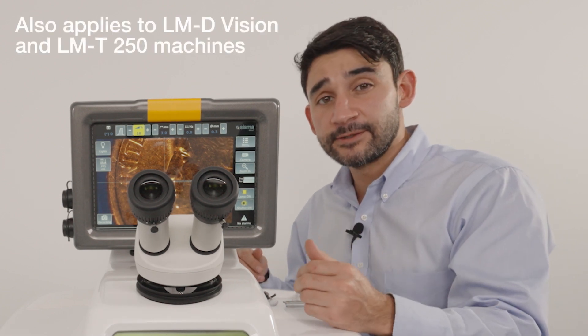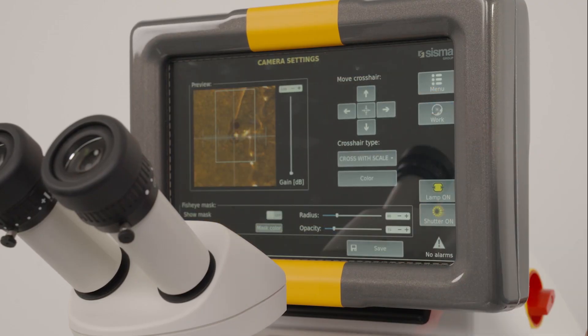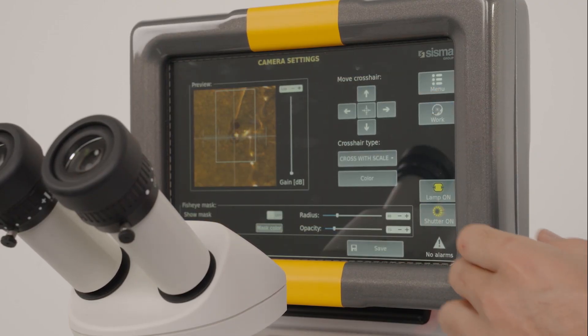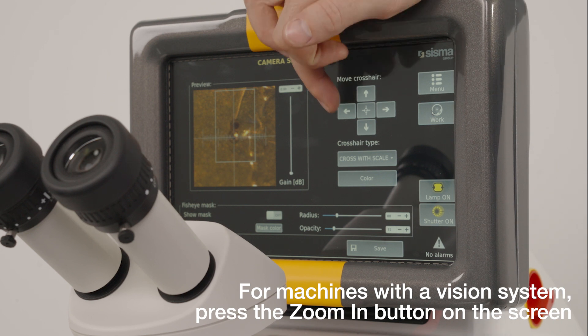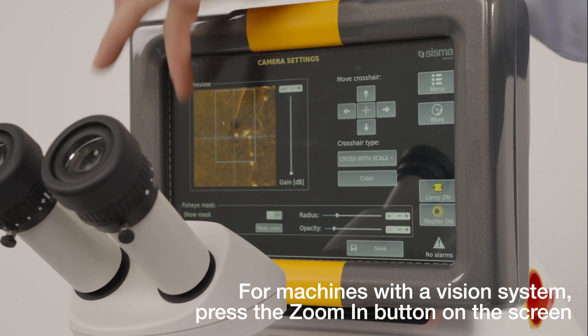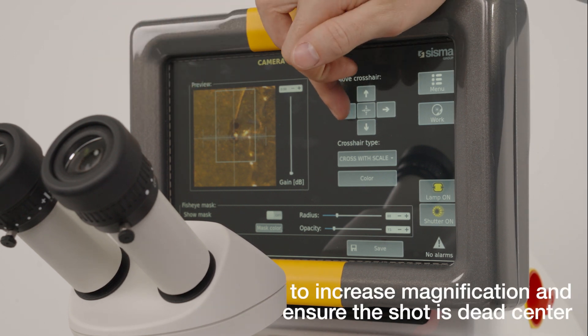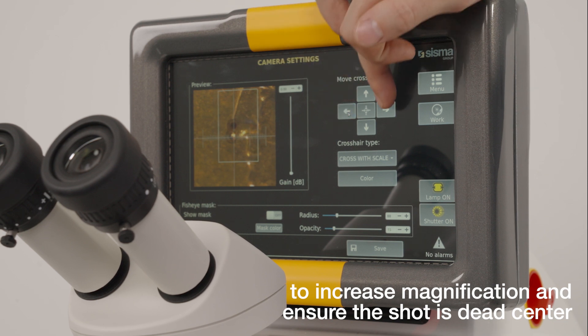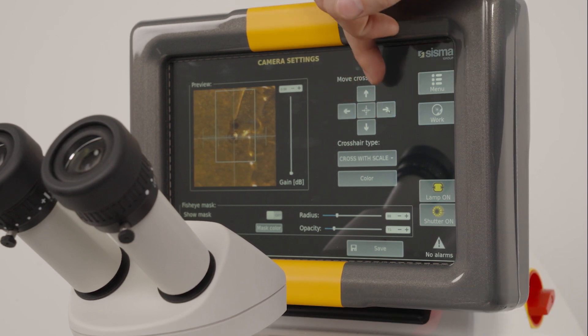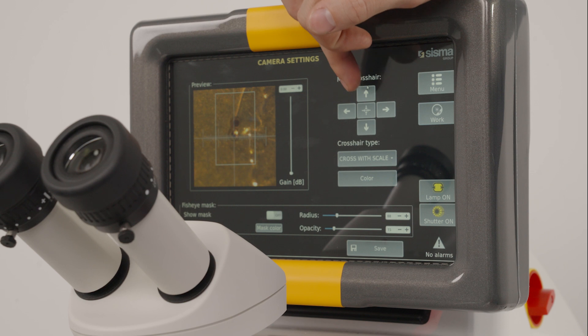If you're using the LMDT model, you can use the touch screen to align the crosshairs. Let's go into camera. To adjust these crosshairs, just use these arrows. You can see we're already pretty well aligned, but these arrows will move the crosshairs left, right, up, and down.